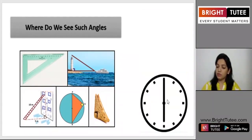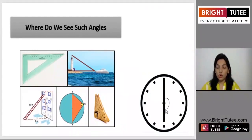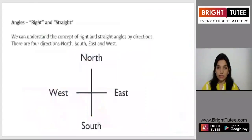In a clock, when it is exactly 6 o'clock, you might notice an angle of 180 degrees.